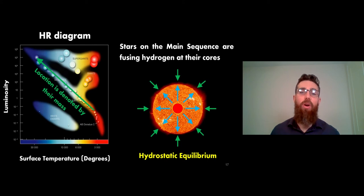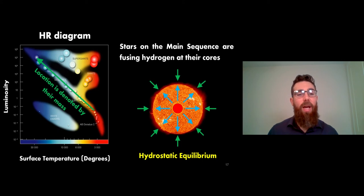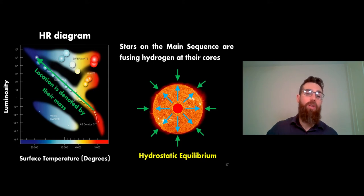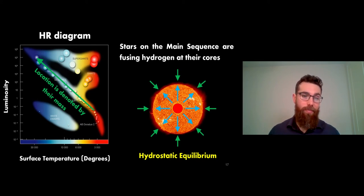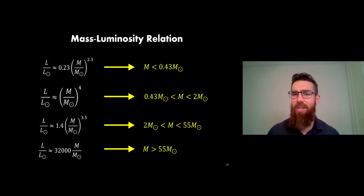Stars on the main sequence are fusing hydrogen at their core - a central core now at the right temperature to fuse hydrogen into helium. They're in hydrostatic equilibrium and quite happy sitting there for a fair chunk of their life. Depending on their mass, they sit at different positions on the main sequence diagonal - the larger the star the higher up they sit. The sun is about a third of the way from the bottom. There is a mass-luminosity relationship: the bigger the star the more luminous it is, but it's not a single simple relation.